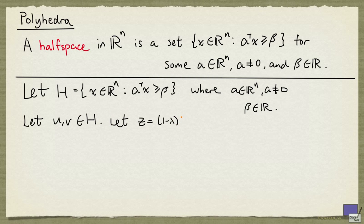In particular, if Z is equal to 1 minus lambda times U plus lambda times V, for some lambda from the interval [0,1], then Z is an element of H.